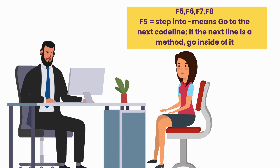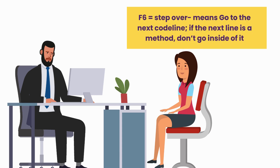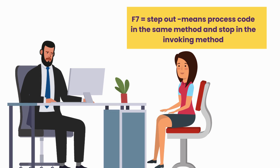F5 is used to step into, meaning go to the next code line. If the next line is a method, go inside of it. F6 is used to step over, meaning go to the next code line. If the next line is a method, don't go inside of it. F7 is used to step out, meaning process the code in the same method and stop in the invoking method.